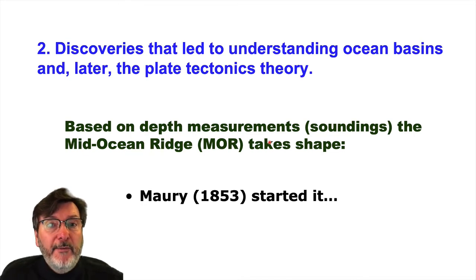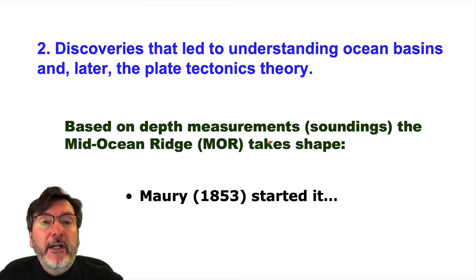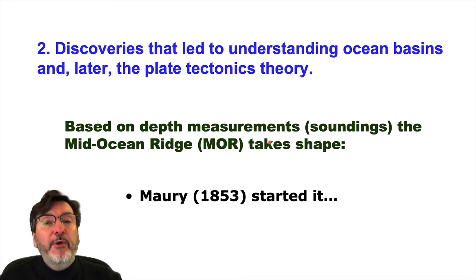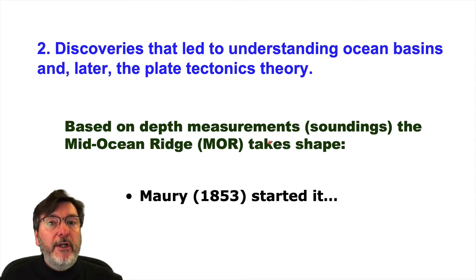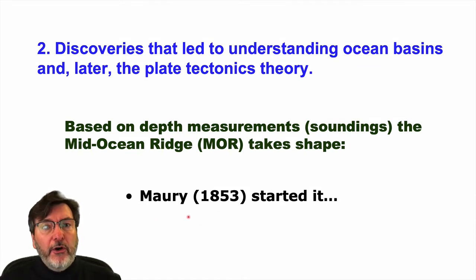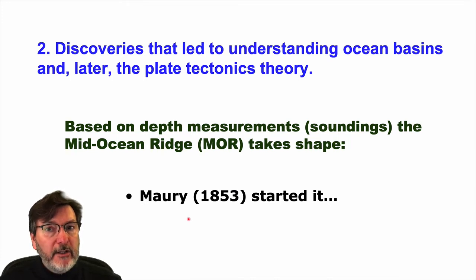Maury in the 1850s — we consider him the first true oceanographer. He put together a big atlas on the oceans, including seafloor shape, seafloor depth, temperature, salinity data, currents, and all the understanding at the time. It turned out to be quite good and quite accurate for what they had. Maury was a naval officer in the U.S. Navy.